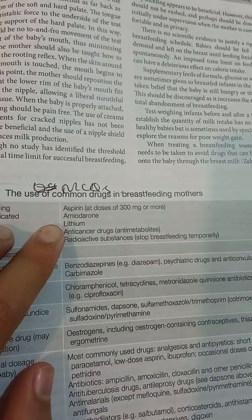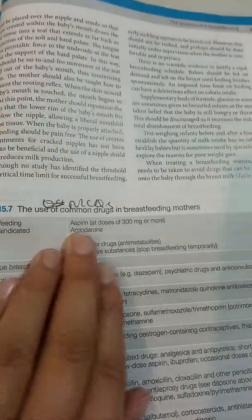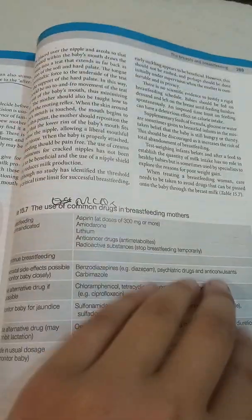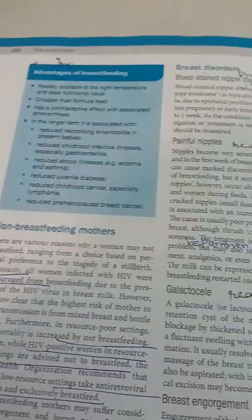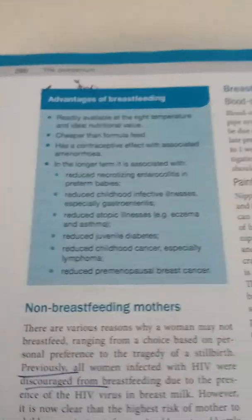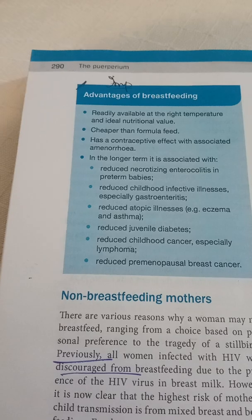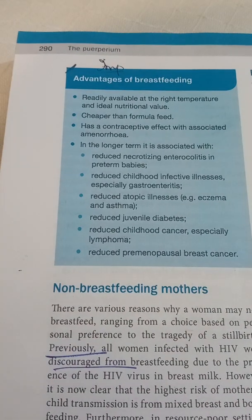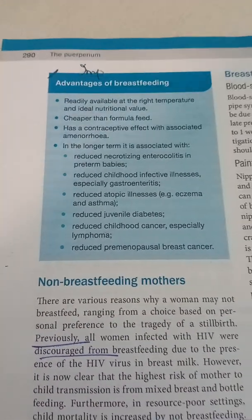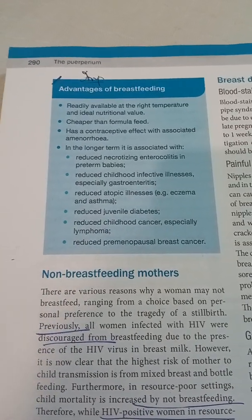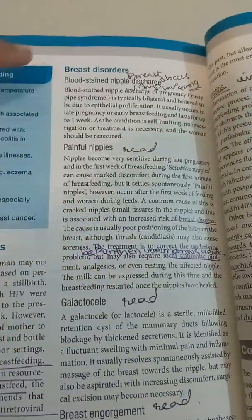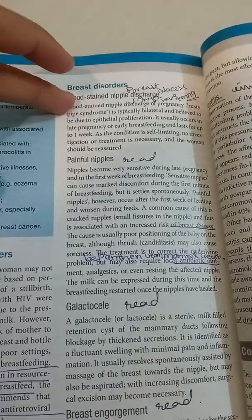Drugs contraindicated in breastfeeding include aspirin, amiodarone, lithium, anticancer drugs, and radioactive substances. For most other drugs, breastfeeding is not contraindicated, but dosage and symptoms should be monitored. Advantages of breastfeeding include being cheap, available at room temperature, having a contraceptive effect, and being associated with reduced risk of necrotizing enterocolitis, eczema, diabetes, childhood cancer such as lymphoma, and pre-menopausal breast cancer.